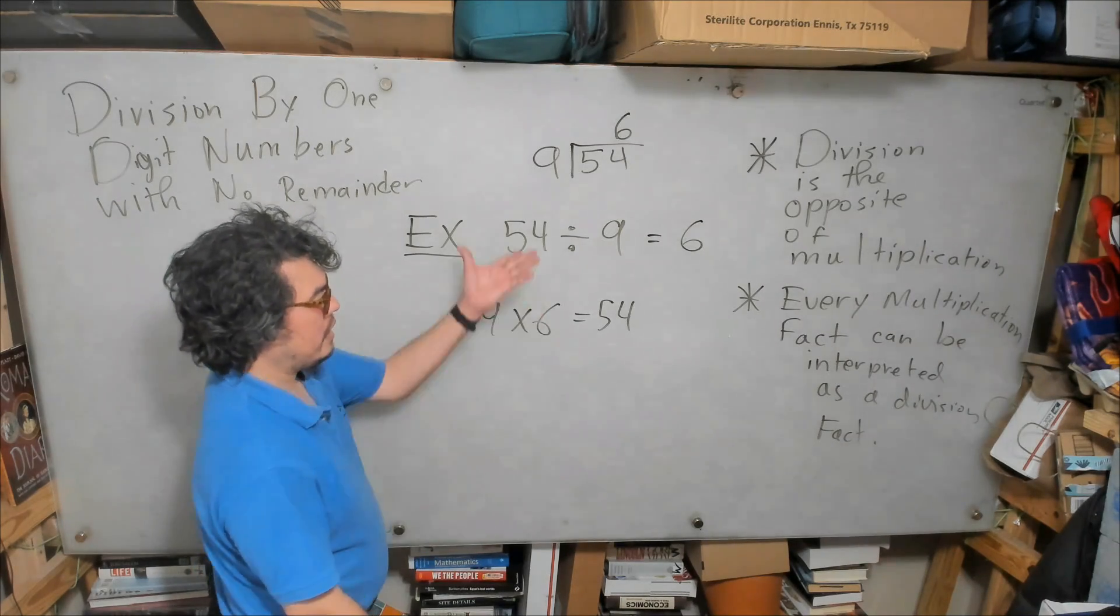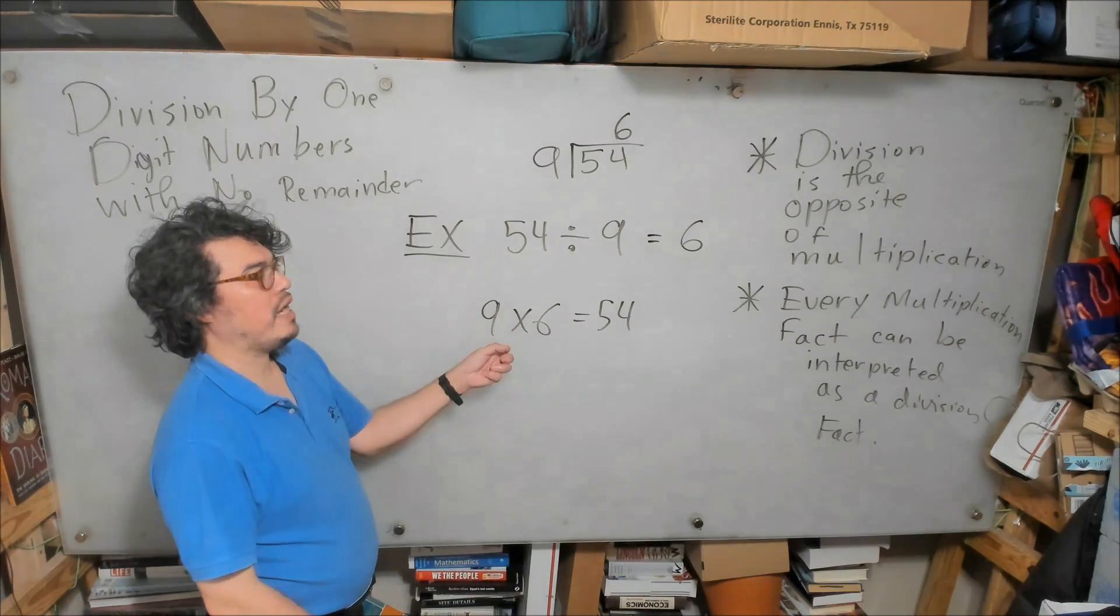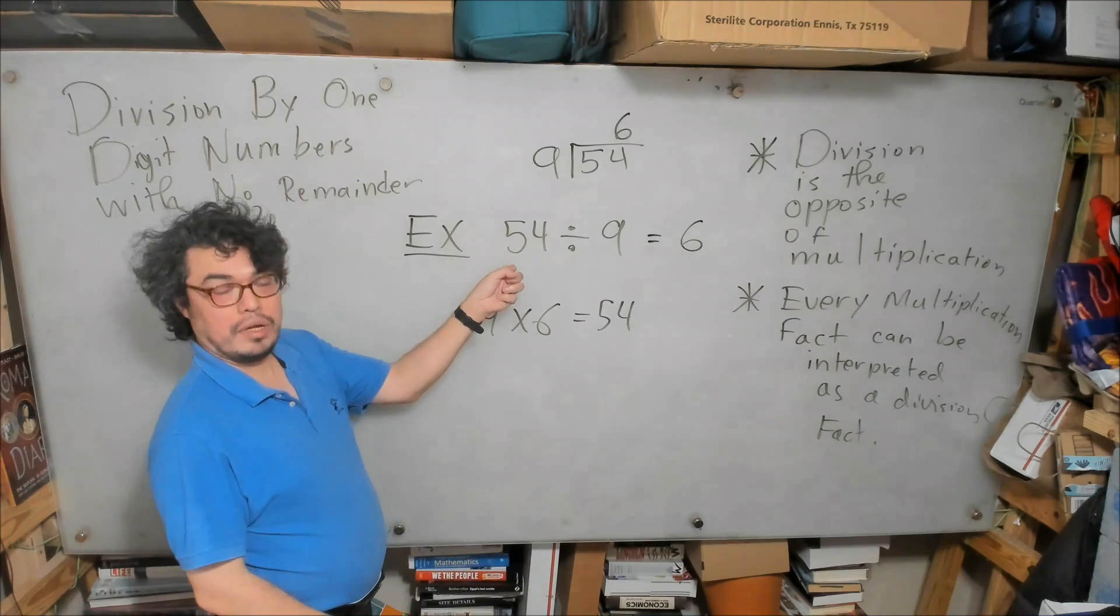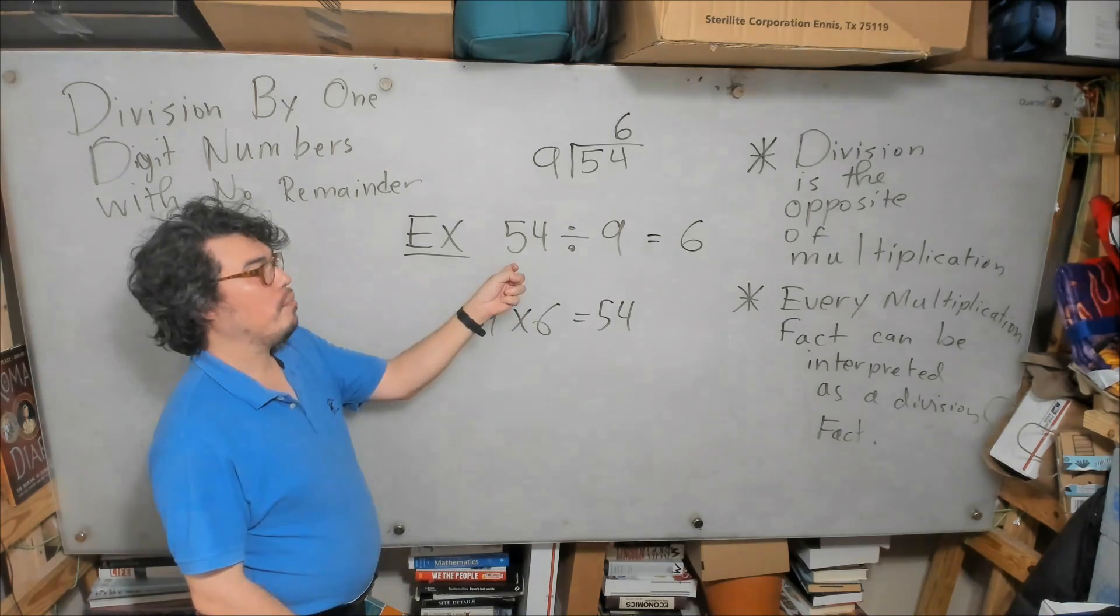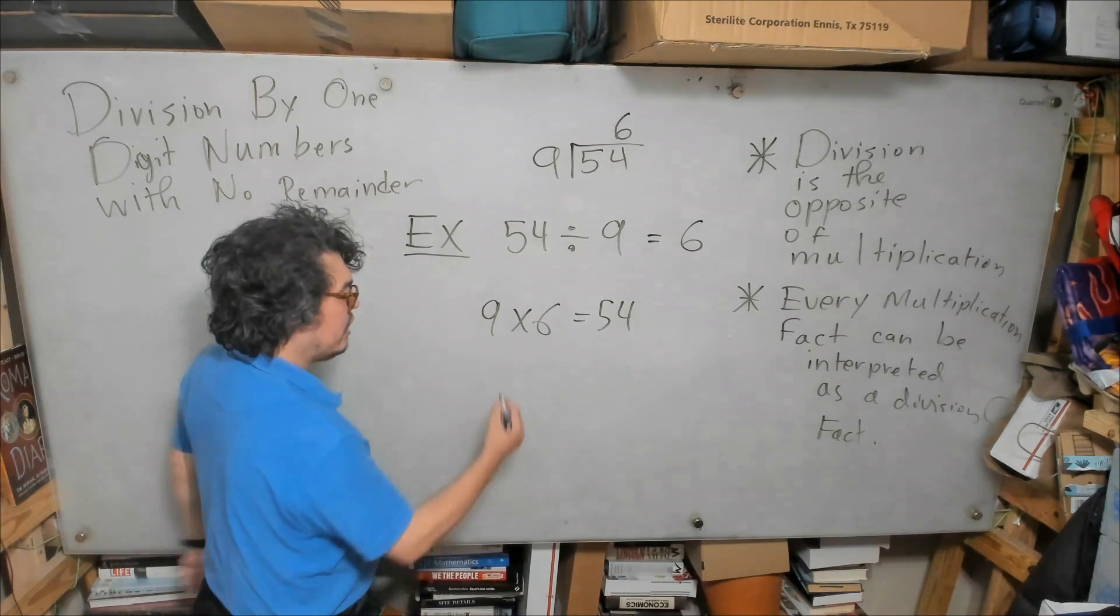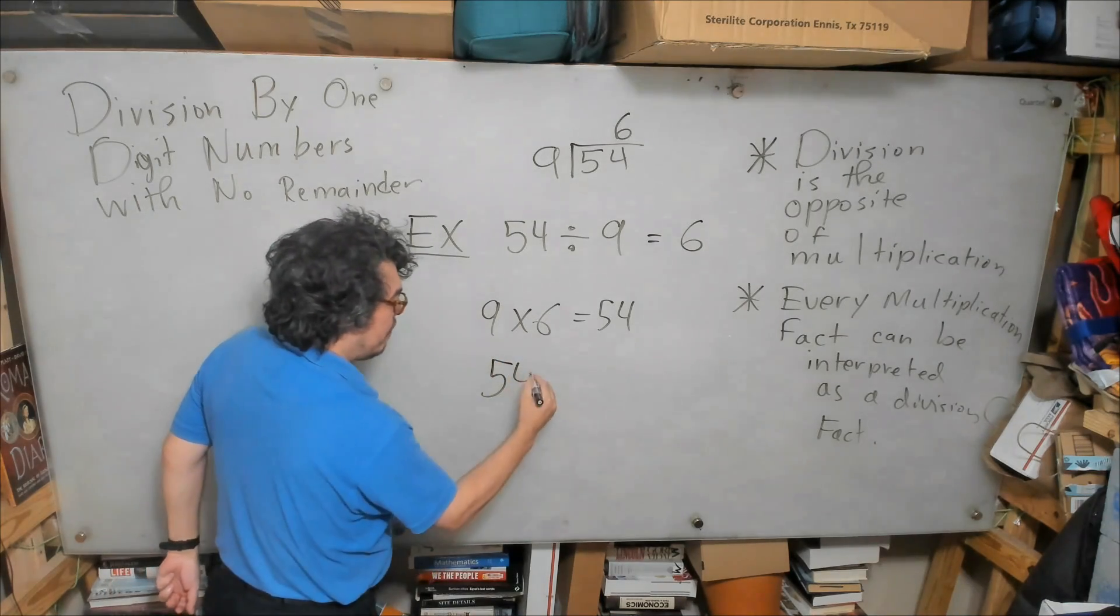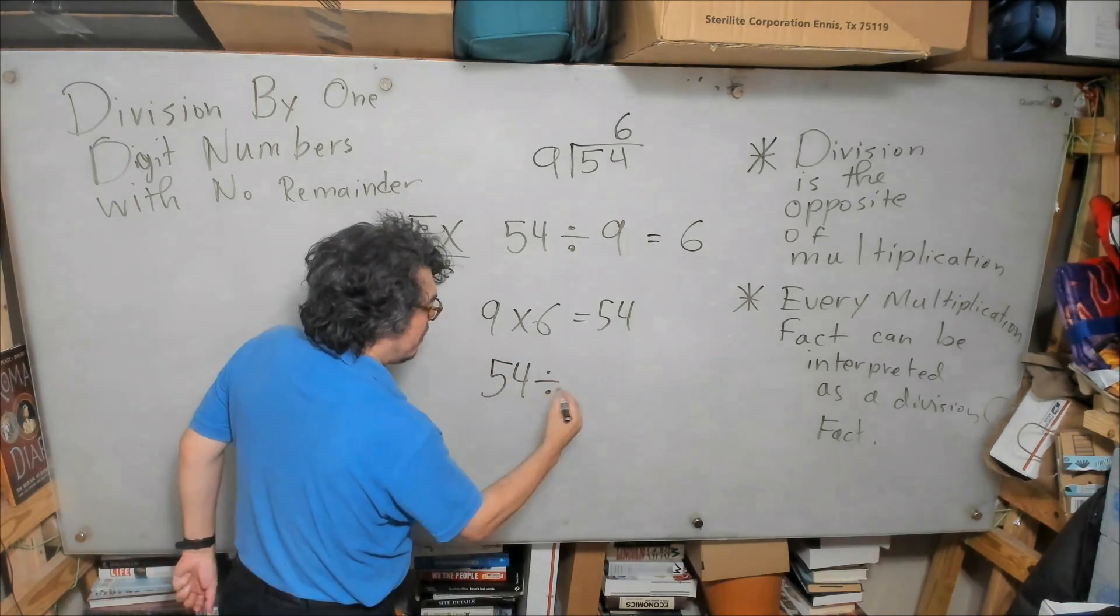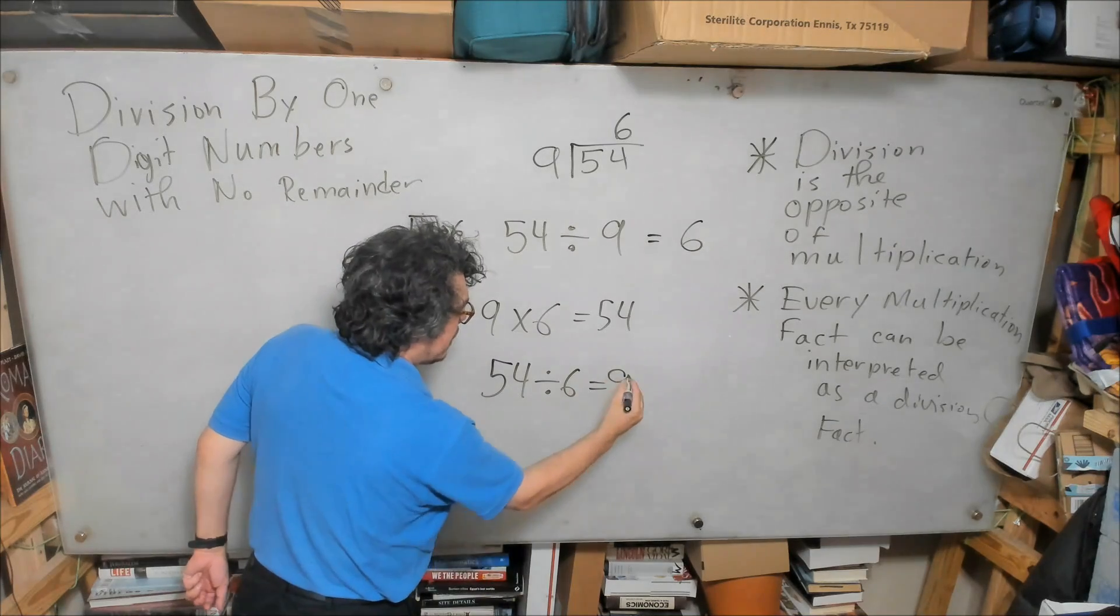This multiplication fact demonstrates that this division fact is true. But it also indicates to us that the following division fact, 54 divided by 6 equals 9.